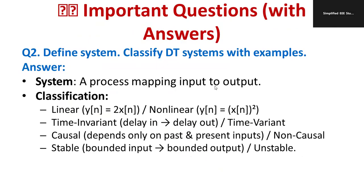Important exam question: Define a system and classify discrete time systems with examples. A system is a process that maps input to output. Linear: y(n) = 2·x(n); Non-linear: y(n) = x²(n). Time invariant: delay in equals delay out. Time variant: output varies with time shift. Causal: depends only on past and present input. Non-causal: violates the causal condition.